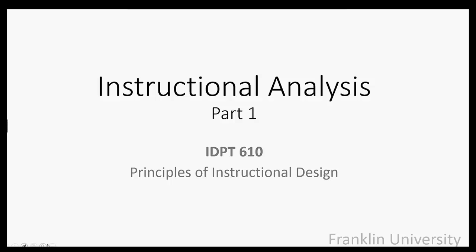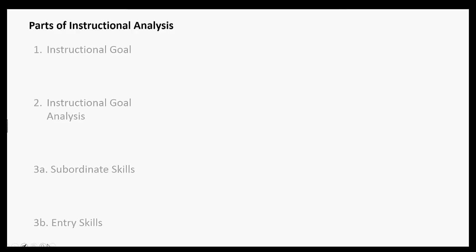Let's take a look at the general pieces of an instructional analysis. The first part at the top is the instructional goal. In our course, IDPT 610, you've already created your instructional goal. Your next step is to do the instructional goal analysis, where you analyze your goal to break it down into the sequence of activities, operations, and decisions required to actually achieve that goal — you break it down into big steps.